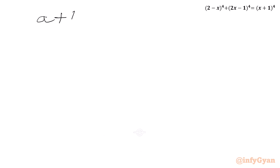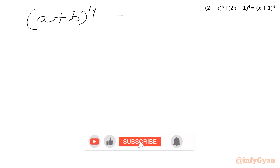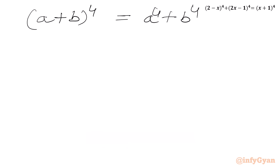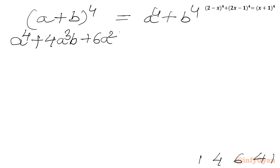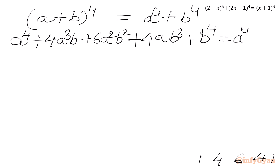Let us expand (a plus b)^4. Using coefficients 1, 4, 6, 4, 1, we get: a^4 plus 4a³b plus 6a²b² plus 4ab³ plus b^4. The right-hand side is a^4 plus b^4.